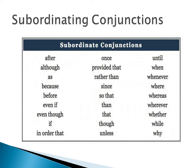Here are other examples of subordinating conjunctions. Read with me: after, although, as, because, before, even if, even though, if, in order that, once, provided that, rather than, since, so that, than, that, though, unless, until, when, whenever, where, whereas, whether, while, and why.